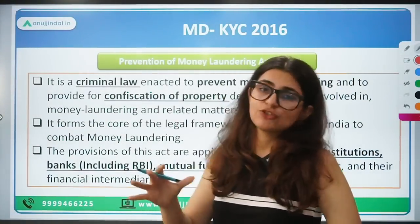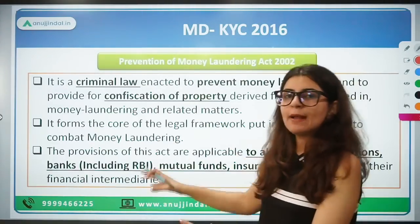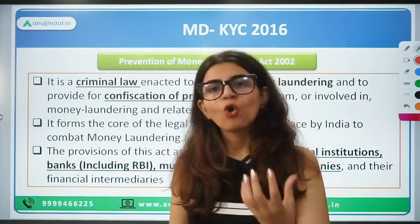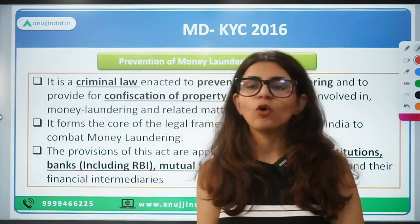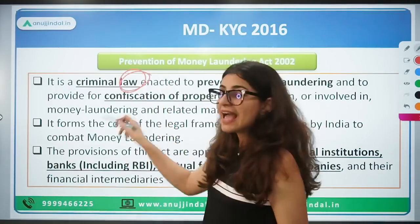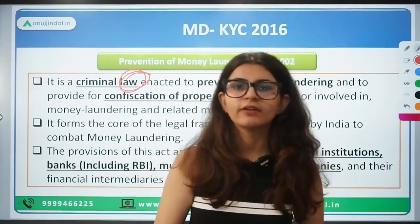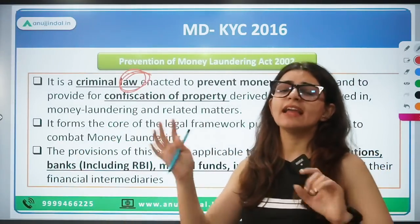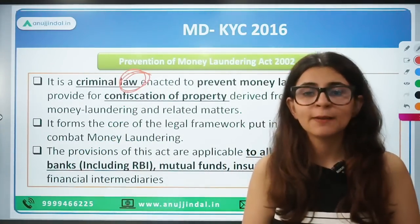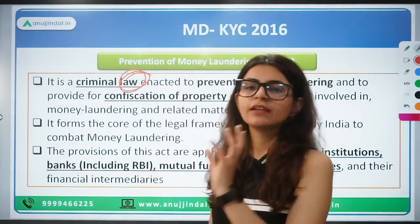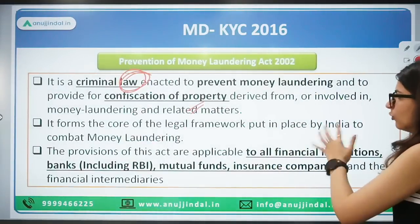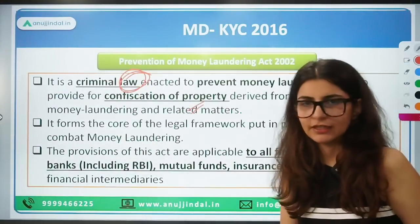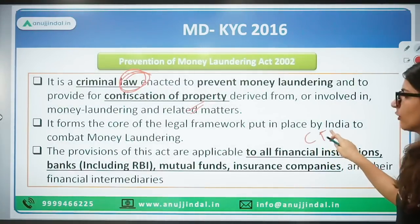The Prevention of Money Laundering Act is a criminal law which gives the government the power to confiscate the property of any individual or entity that is working towards money laundering or terror financing. This act gives the power to the central government to confiscate such property to control money laundering efforts, working towards anti-money laundering and countering financing of terror.